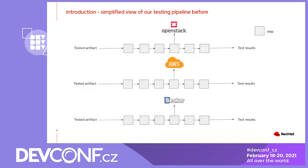So how did our testing pipeline look before? If you are testing an operating system, your pipeline usually ends up something like this — a very simplified view where the input is an artifact, either a package or a module, which you are trying to integrate into the base operating system. Then you have the testing process where you provision VMs to run your tests against. Previously, we had separate pipelines for all the infrastructures we support: OpenStack, AWS, and Beaker. OpenStack and AWS are used mostly for VMs, and Beaker is for bare metal machines.